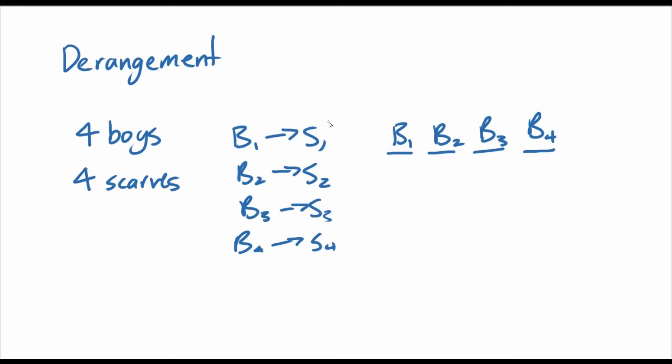So to approach this problem, let's just go through and do some casework. Boy one can either have scarf two, scarf three, or scarf four. So boy one can have, let's say boy one has scarf two, right? Then boy two can have scarf one. And then boy three and boy four could switch. Right, so this works, this is one possible. Let's say boy one has scarf two and boy two has scarf one. Is there another way we can arrange these? There isn't, because this is not a valid combination, because boy three gets his own scarf.